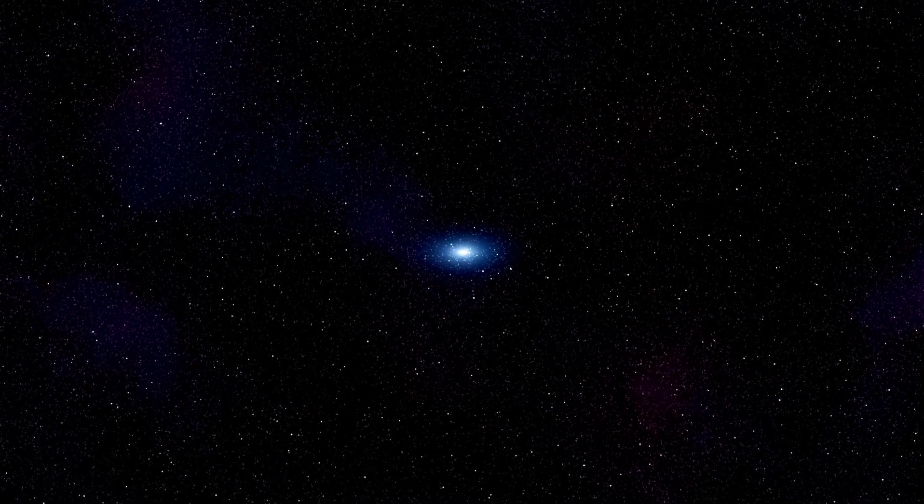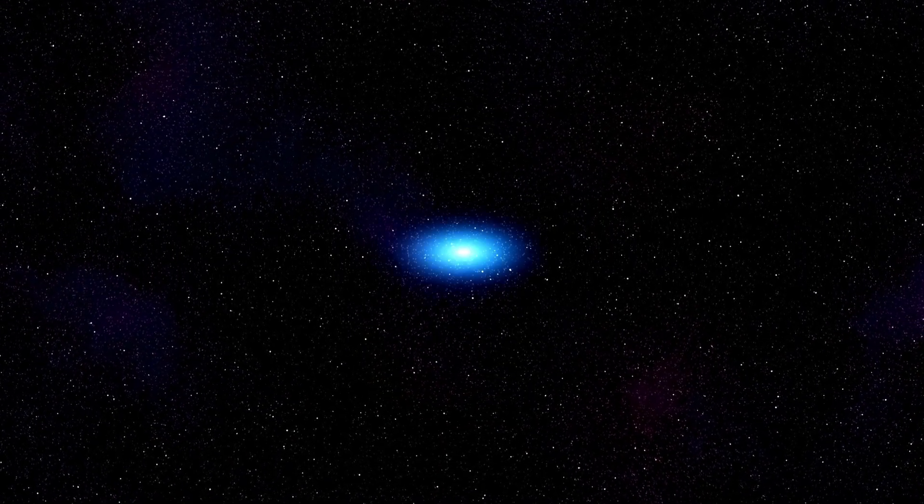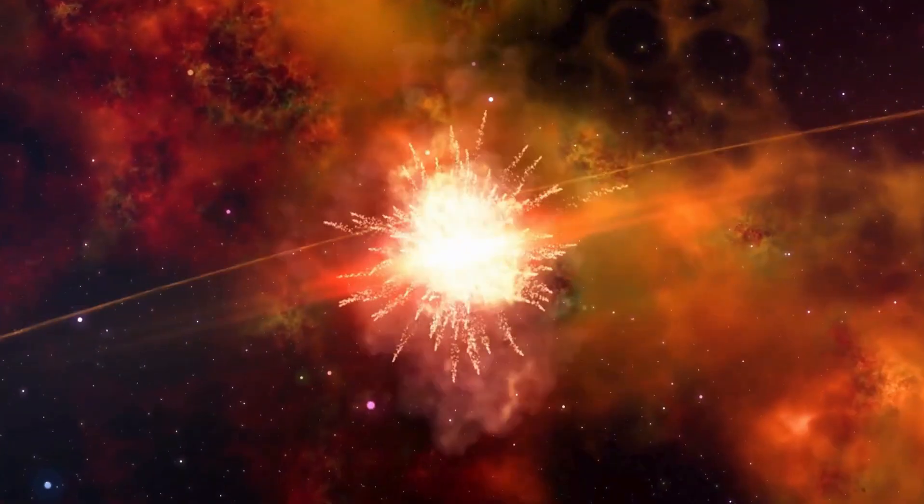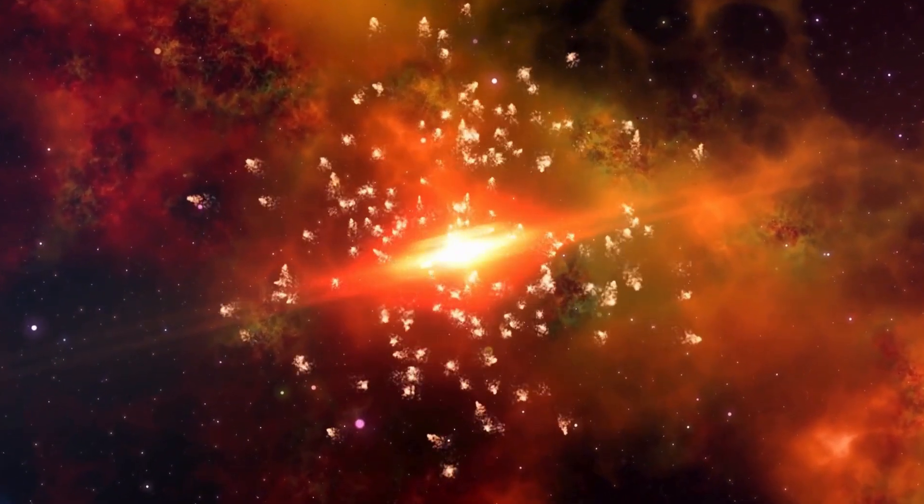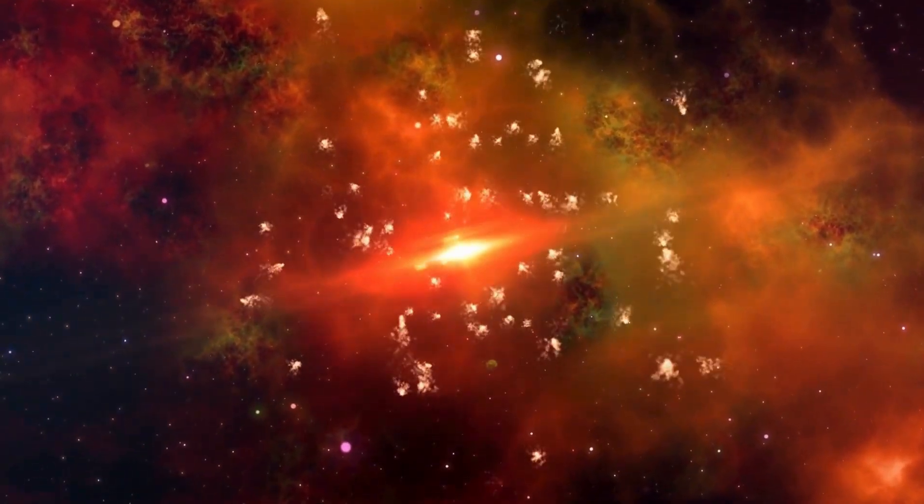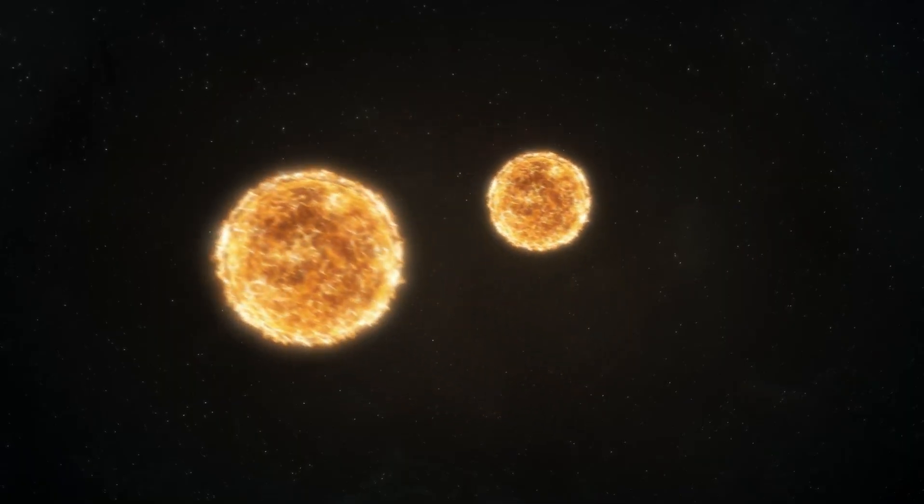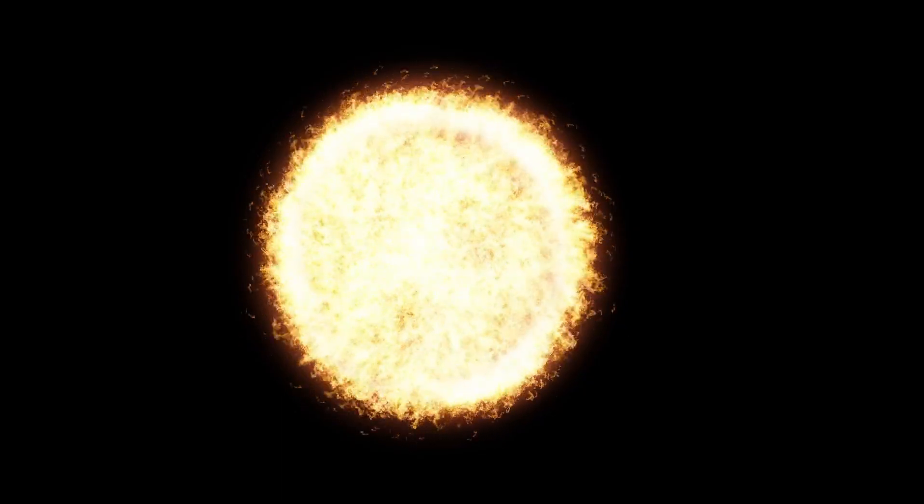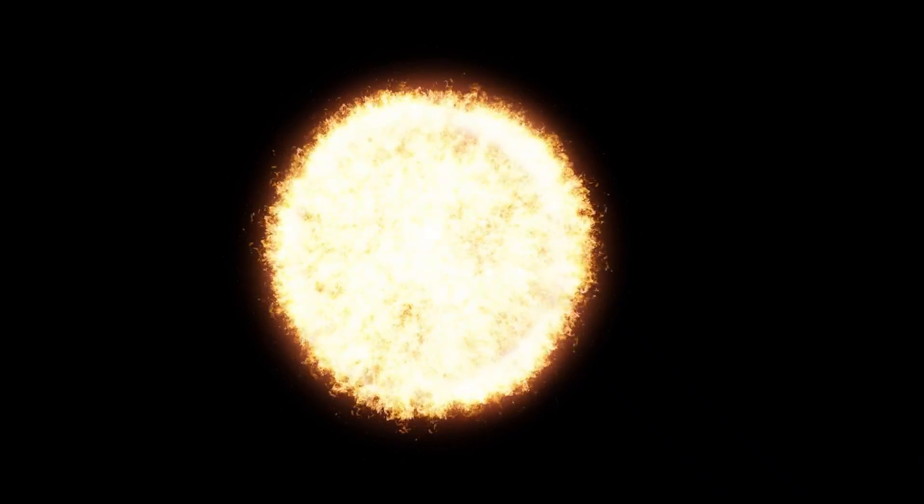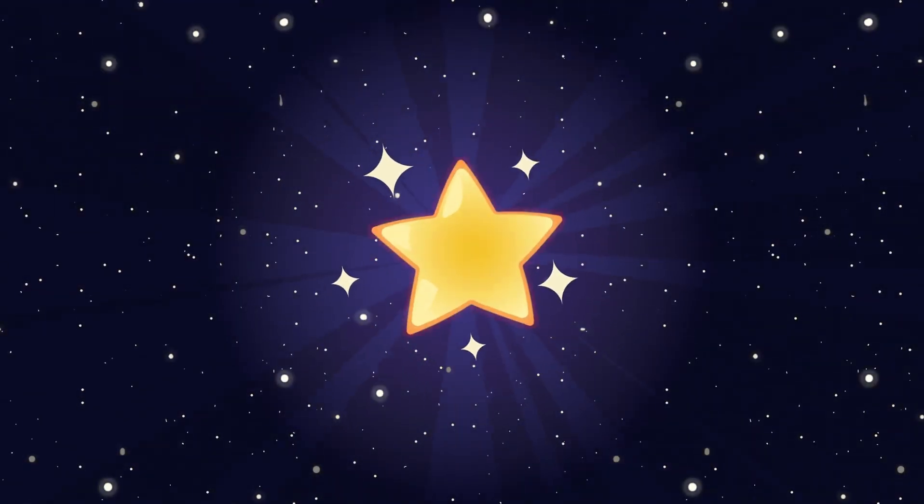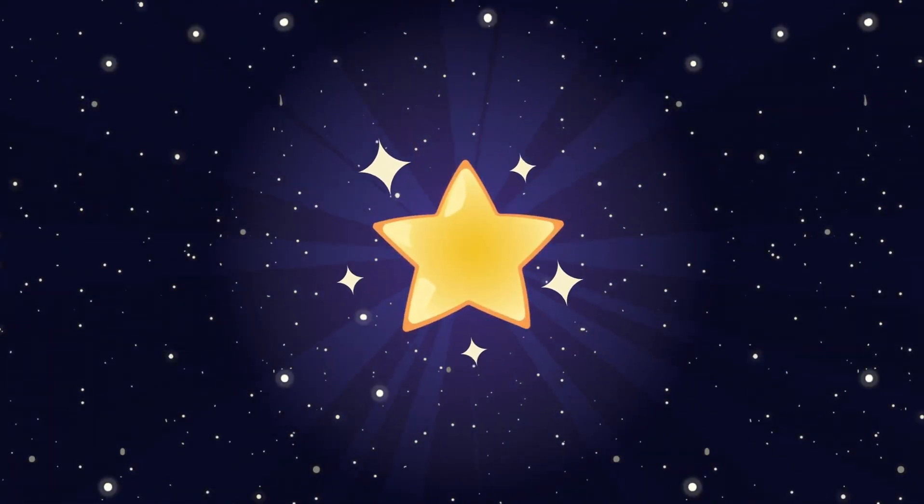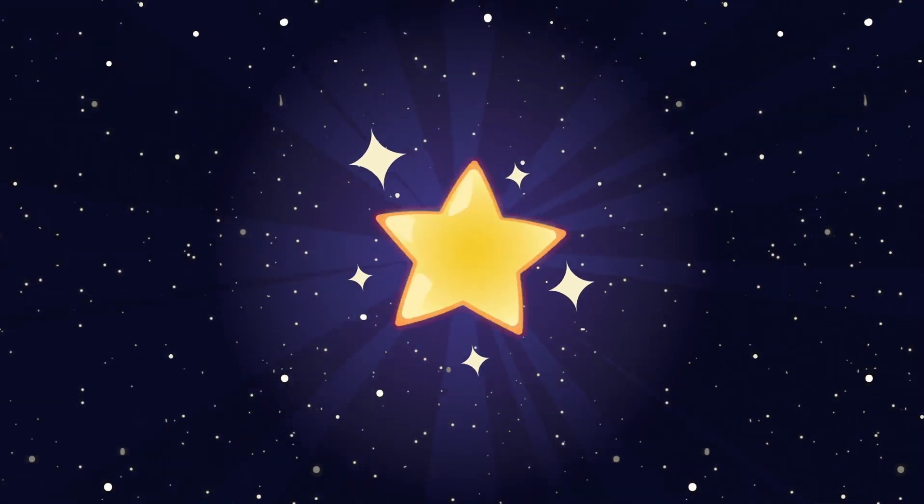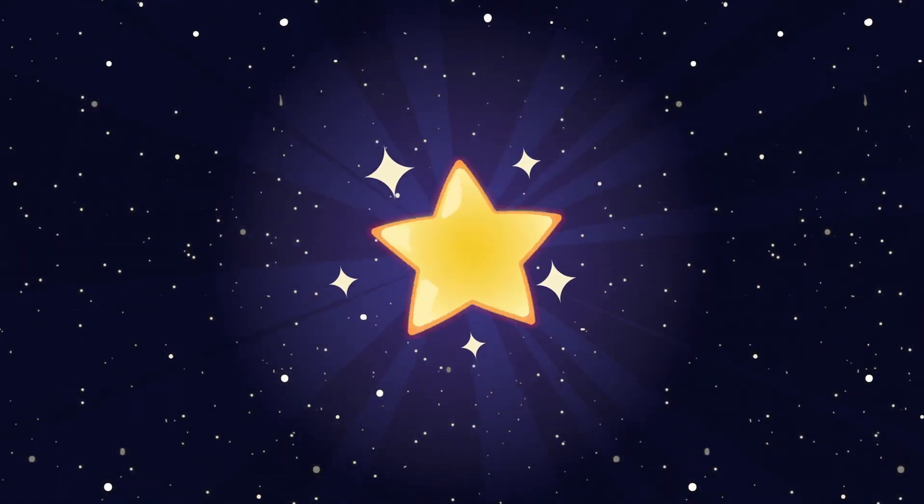Brace yourselves for a cosmic cataclysm of unprecedented proportions. Betelgeuse, the red giant star poised on the edge of our galaxy, is sending ominous signals through the universe. Using the James Webb Space Telescope, astronomers have uncovered something profoundly unsettling about this colossal celestial body. As renowned astrophysicist Brian Cox issues a grave warning, the question looms: Are we on the precipice of witnessing a catastrophic supernova explosion that could forever change the night sky as we know it? Let's dive in.